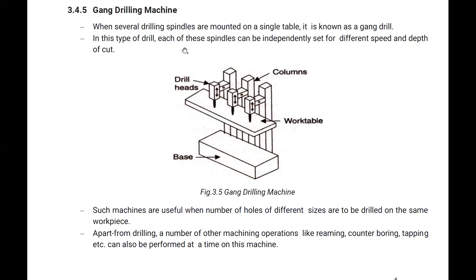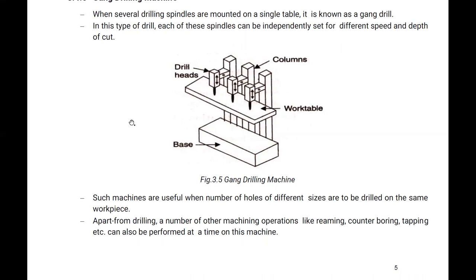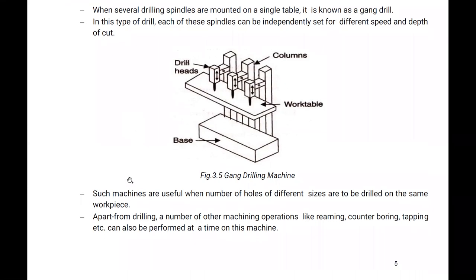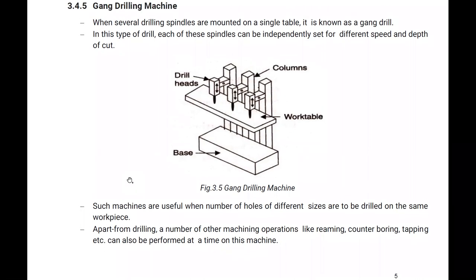In this type of machine, each spindle can be independently set for different speed and depth of cut. Such machines are useful when a number of holes of different sizes are to be drilled on the same workpiece.